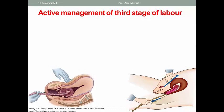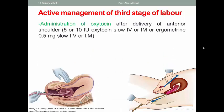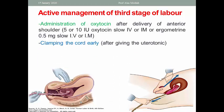For active management of the third stage, we administer oxytocin after delivery of the anterior shoulder — 5 or 10 international units, slowly intravenous or intramuscular. Oxytocin is the best choice among uterotonic drugs. Ergometrine may be given at 0.5 mg or 0.2 mg slowly intravenous or intramuscular, but there is a risk of hypertension, so it is contraindicated in hypertensive patients. Clamping of the cord is done early after giving the uterotonic.